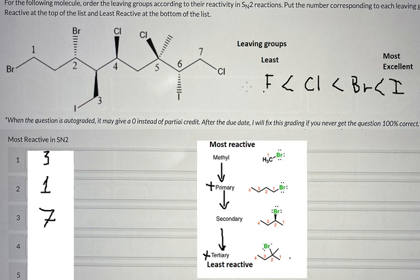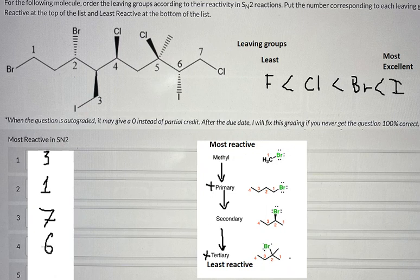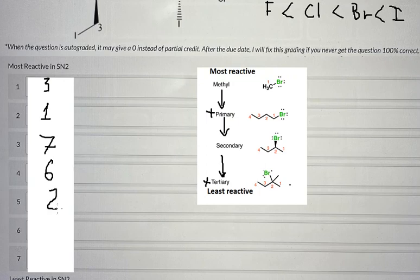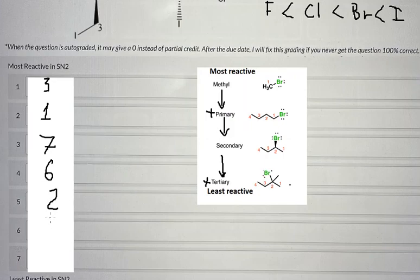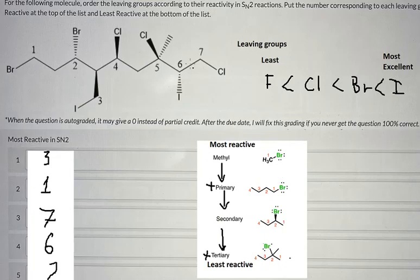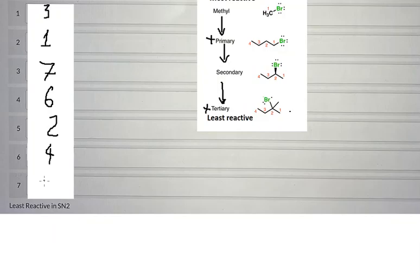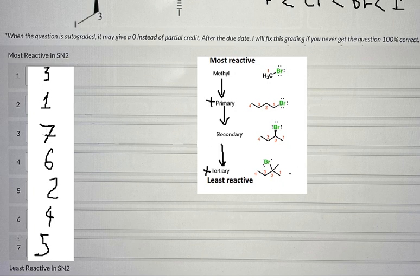After we identify the secondaries, we compare them. The secondary iodide is number 6, so we put number 6 here. The next one is Cl, and then the last one is tertiary, so that should be number 5 — we put number 5 here. That is the technique on how to answer this one. This is the end, thank you for watching.